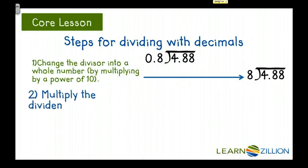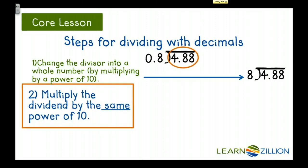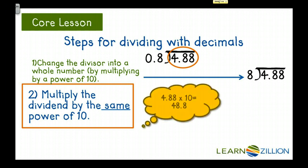The next step is to multiply the dividend by the same power of 10. So here's our dividend. And since we multiplied the divisor by 10, we also have to multiply the dividend by 10. So if we did that, we would get 48.8. So now our problem looks like this.